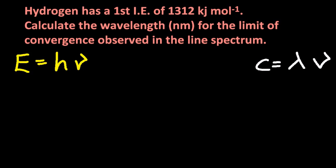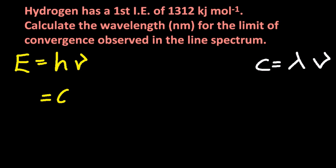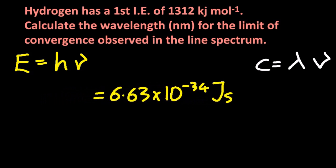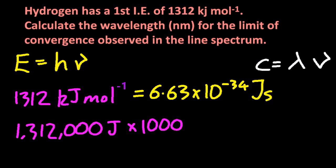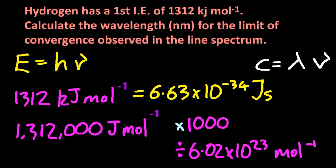You just need to put the numbers in to get the wavelength. Planck's constant is in table 2, right at the bottom — it's a very small number, 10 to the minus 34. The first problem is that Planck's constant uses joules, but the question gives kilojoules per mole. Multiply by 1,000 to convert kilojoules to joules, then divide by Avogadro's constant to remove the per mole.